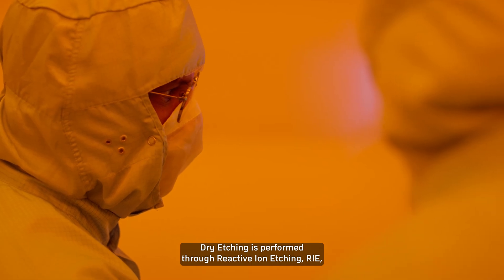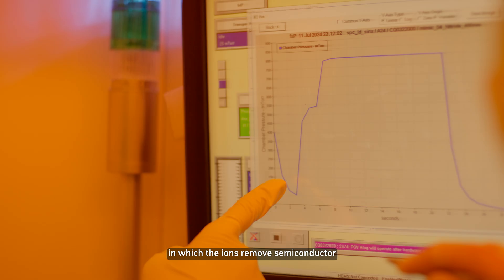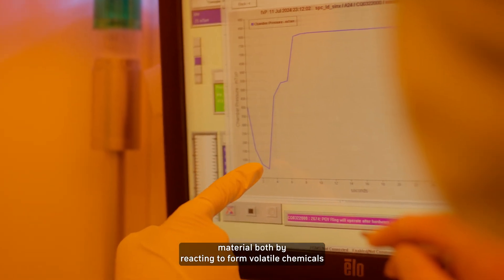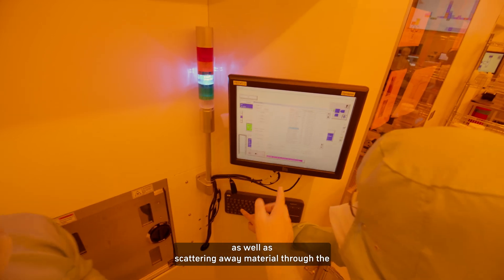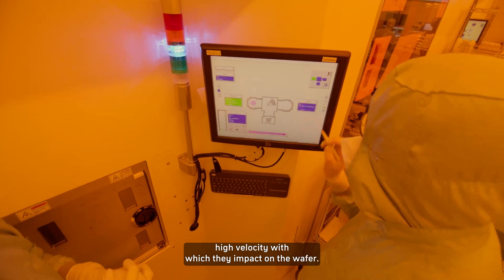Dry etching is performed through reactive ion etching (RIE), in which the ions remove semiconductor material both by reacting to form volatile chemicals as well as scattering away material through the high velocity with which they impact on the wafer.